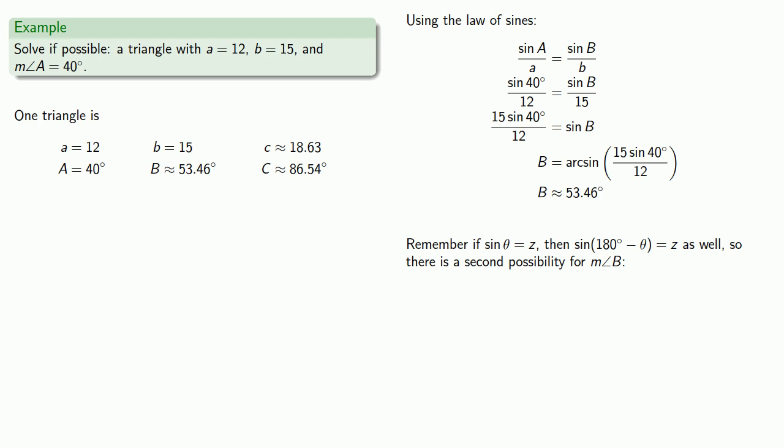So, there is a second possibility for the measure of angle B, 180 degrees minus 53.46 degrees.